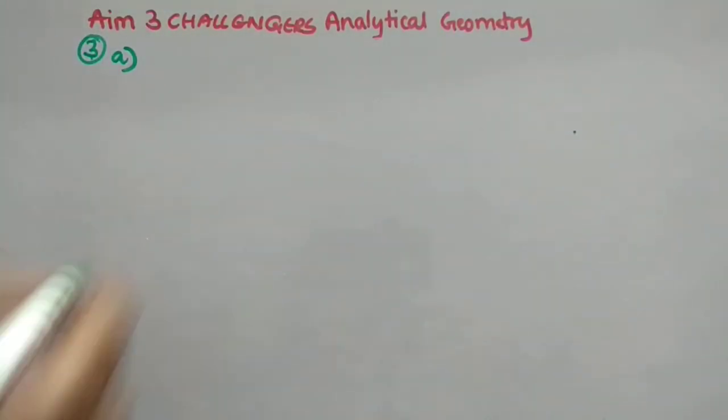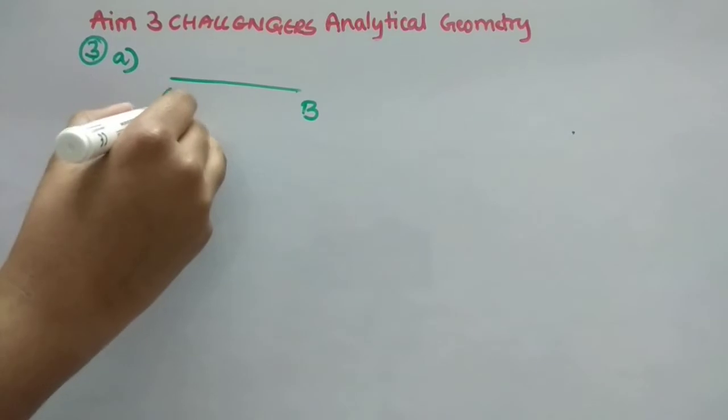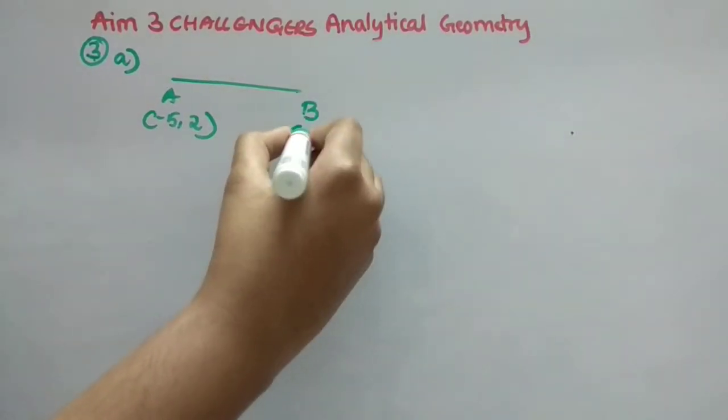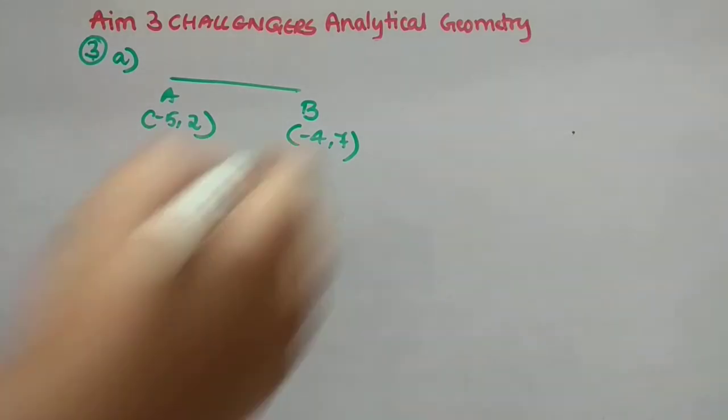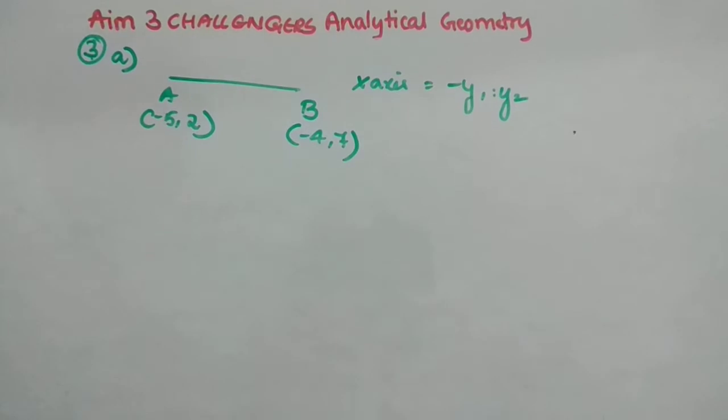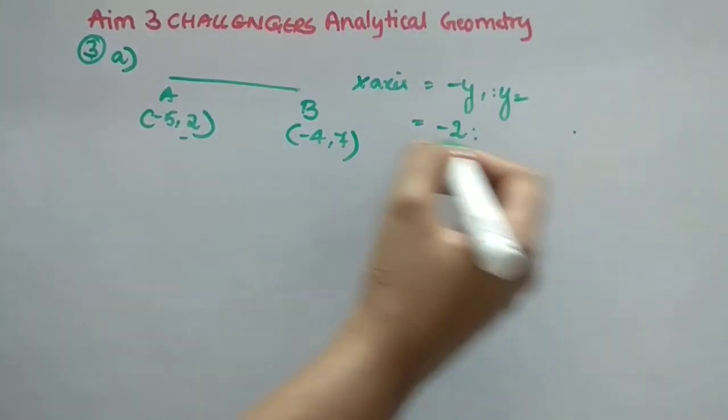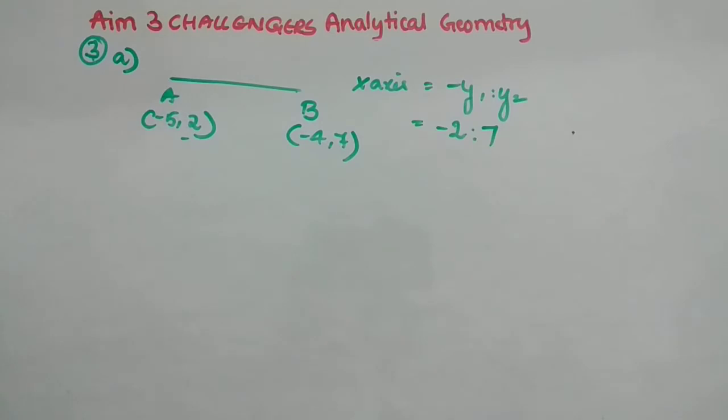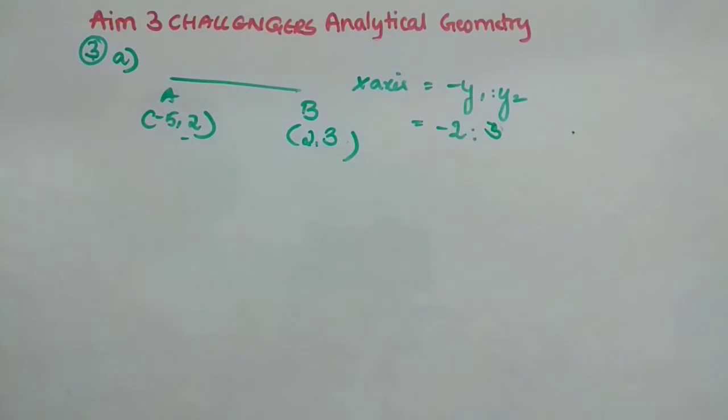Now, third one. So here, first A is there. We will solve A first. Here we have to find a ratio for the line segment. Our line segment is given. That is A and B. Wherein, here we have A as minus 5 comma 2, and B as minus 2 comma 7. And what we have to write, it is divided by x-axis. So x-axis formula is minus y1 is to y2. So put it there. Now what is y1, 2? So we will write it as minus 2. Because minus is there in the formula itself. Now minus 2 is to 7 is the answer. Sorry, here I am sorry, I have written wrong data. It is 2 comma 3 here. So it is 3. Sometimes it happens.